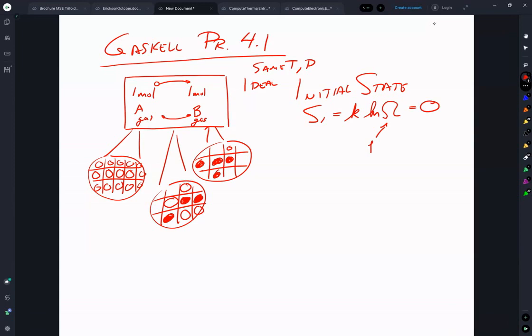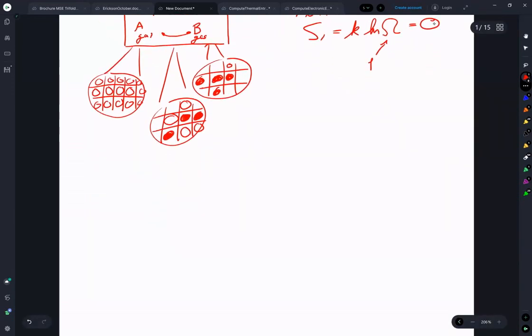So then, as they mix, how do we describe the number of ways that they can mix? And we know that we're making this approximation that the arrangement with the maximum number of arrangements is approximately the total. So this means we don't have to go through and differentiate, but we just have to figure out the total number of ways that we can mix these together.